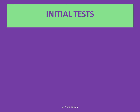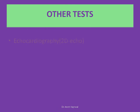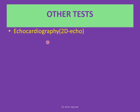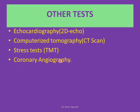So initially, what tests will be done? Electrocardiogram, blood tests of certain proteins such as CPK, CPK-MB, and Troponin, and chest X-ray. Other tests will also be done, such as 2D echocardiography. Some people may need a CT scan, stress tests, and coronary angiography. Please remember, usually these are not the initial tests.